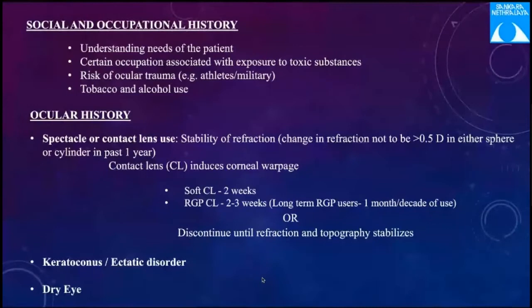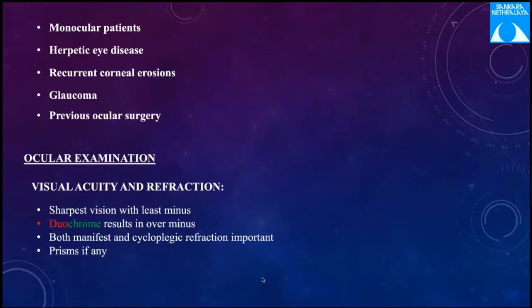Keratoconus and ectatic disorders are absolute contraindications for laser vision correction because these procedures weaken corneal biomechanics and can lead to progression. Dry eye history is also very important. In monocular patients, laser vision correction is not absolutely contraindicated, but since there is always a risk of complication, these patients should be counseled and discouraged. Some monocular patients may have an ocular prosthesis, which can be a source of infection.